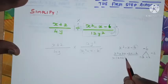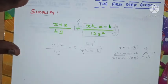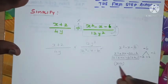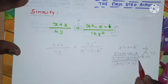And these two terms, 3 is common, I'm taking it outside, so (x+2) remains. Look at these two terms, (x+2) is common and the remaining is (x-3).